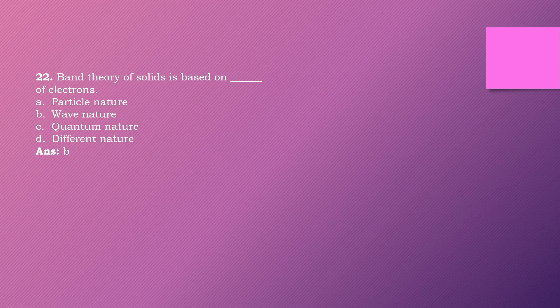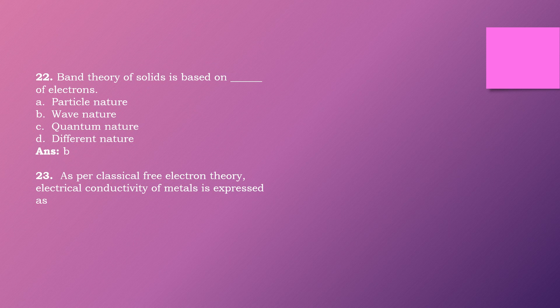Question twenty-three: As per classical free electron theory, the electrical conductivity of a metal is expressed as dash. Options are: σμ = Ne, ρ = Neμ, σ = Neμ, μ = Neσ. The right answer is option C: σ = Neμ.